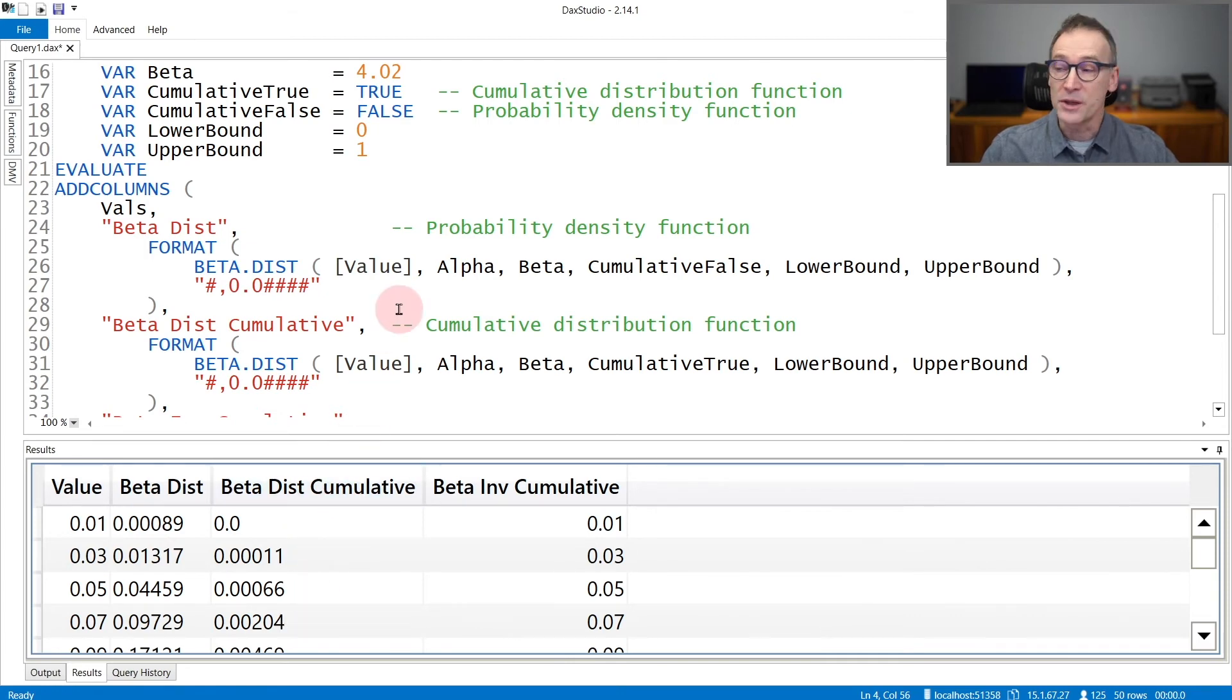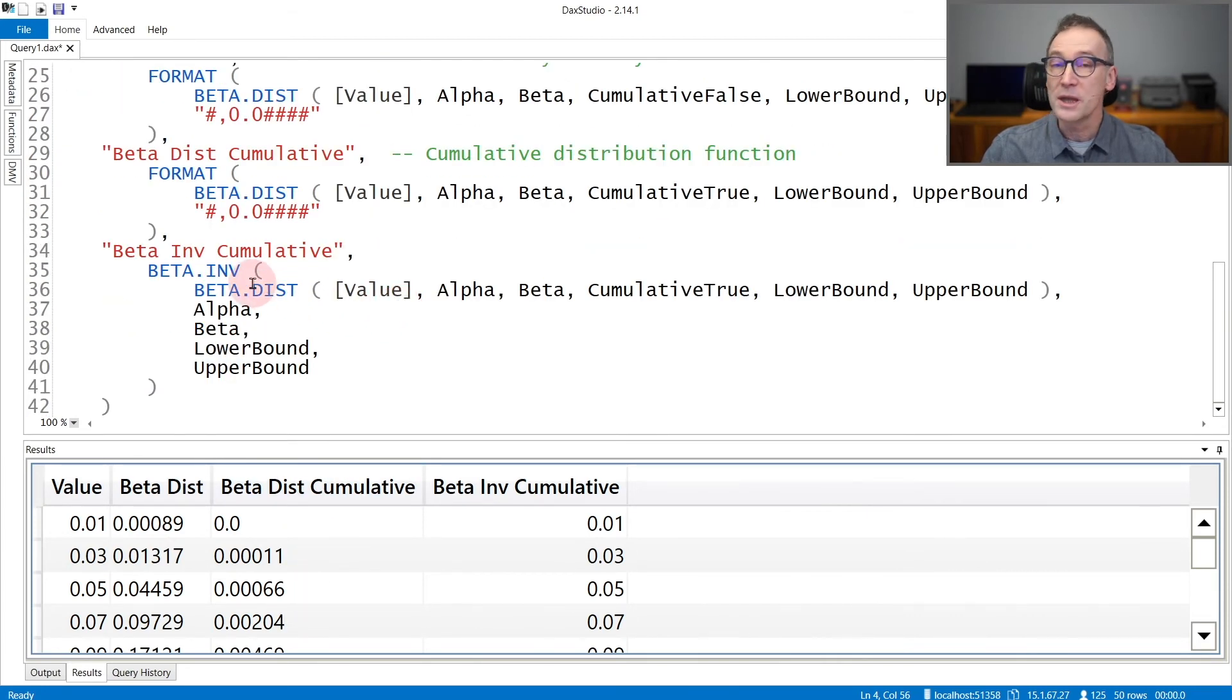If you have the cumulative value, you can also use the inverse function beta-inv that returns the original value. So given a cumulative distribution, it returns the original value.